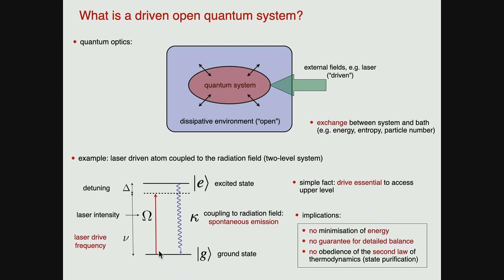There is also no guarantee for the idea of detailed balance. What is detailed balance? It is the statement that two states in the system — say the upper and lower levels — are connected by transition probabilities governed by nothing else but the energetic distance between these levels. You can see that this cannot be the case here. The energy distance would be just the distance between the two black lines, but there are many more scales in this problem — the driving frequency, the driving intensity, and the kappa scale. So detailed balance is violated the moment you switch on a drive and operate the system like that.